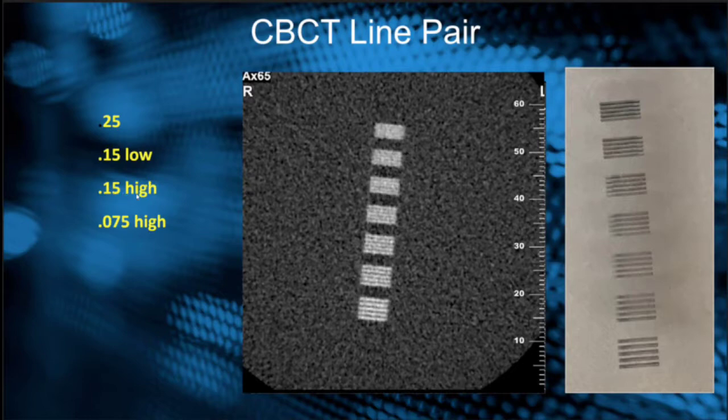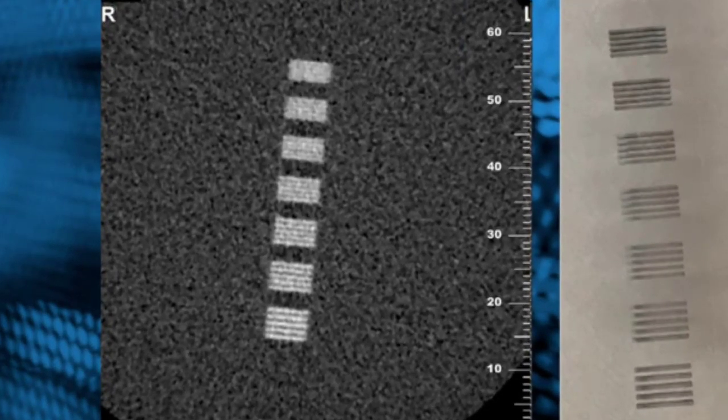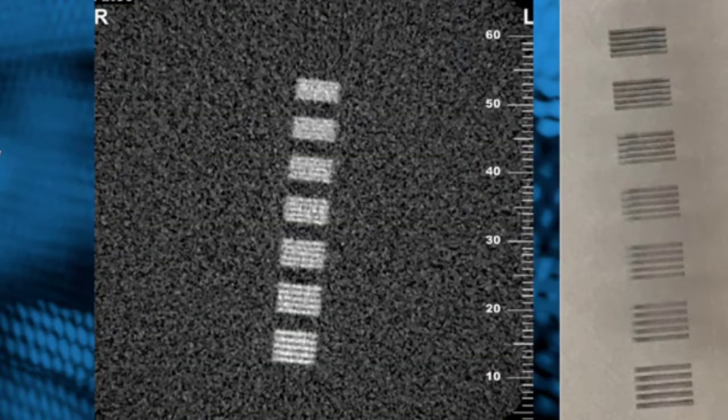If we take that same 0.15 voxel scan and bring it to a high res or more frame count, look at the detail that we have now. It's a little bit fuzzy and it starts to look noisy, but at the same time we're getting better line pair separation in the scan.